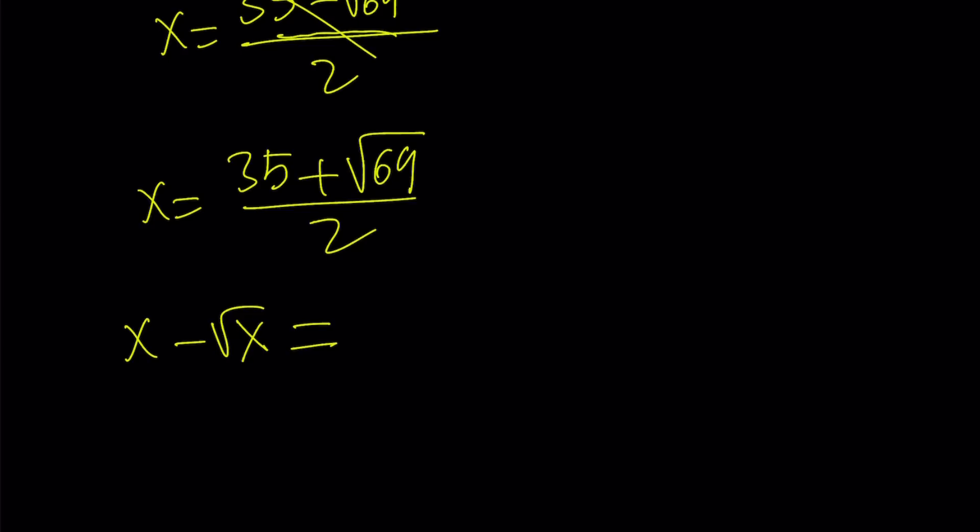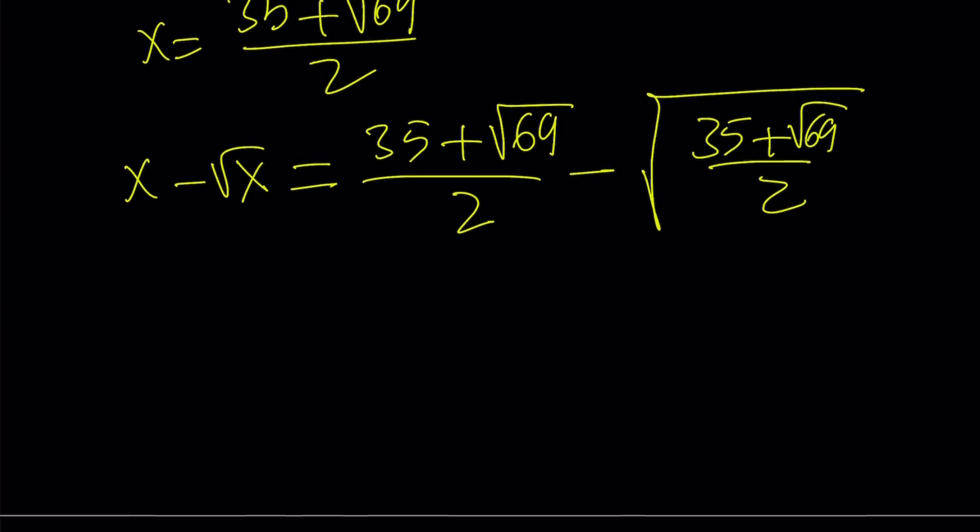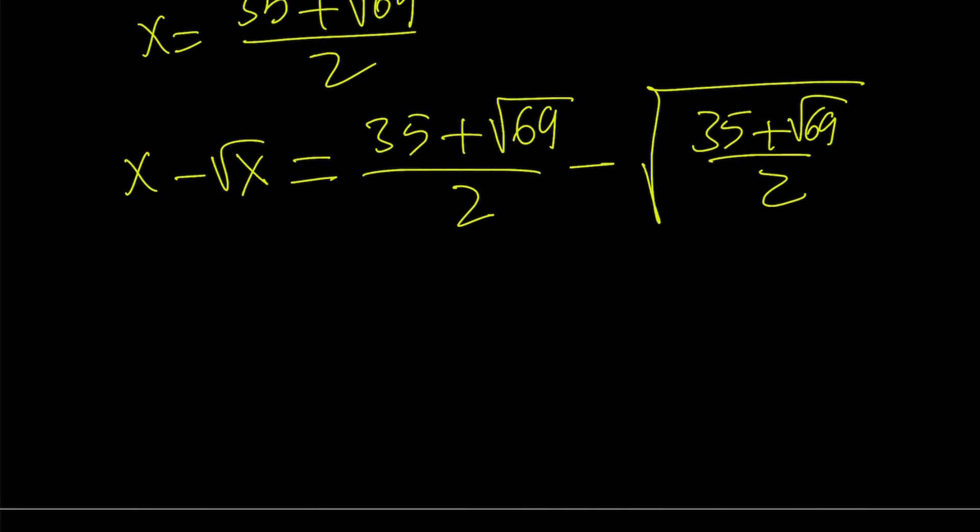If you plug it in here, you're going to get 35 plus the square root of 69 over 2 minus the square root of 35 plus the square root of 69 over 2. So we have a nested radical here. So we're going to denest it. How do you denest this expression? That's kind of fun to do.